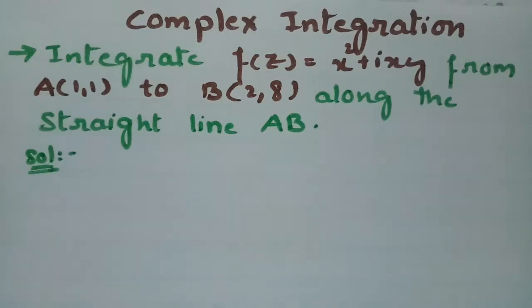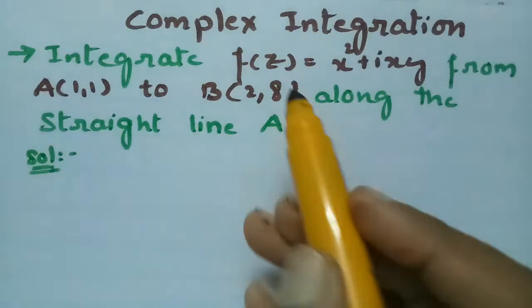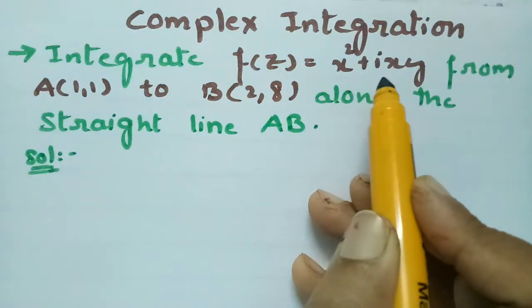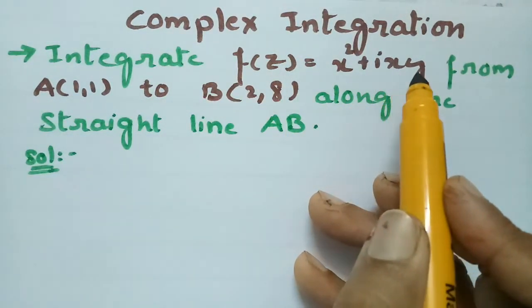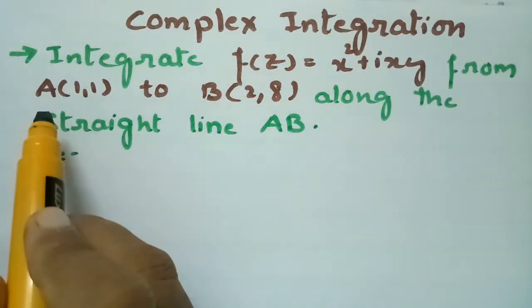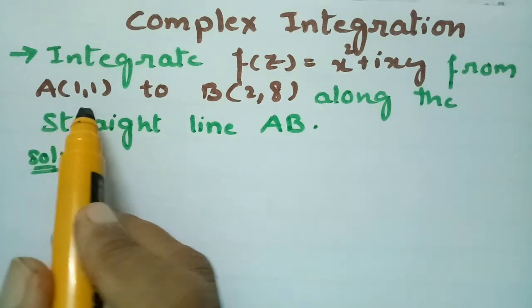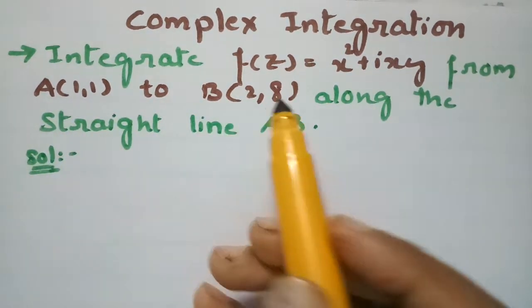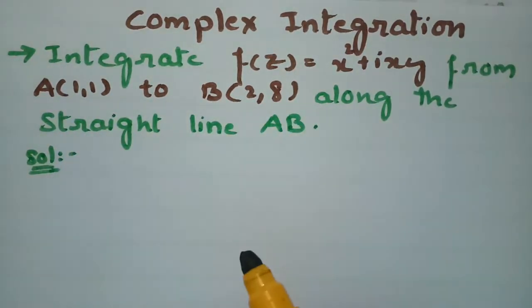In today's video I am going to explain a problem from complex integration. We have to integrate f(z) = x² + i·xy from the point A(1,1) to B(2,8) along the straight line AB.